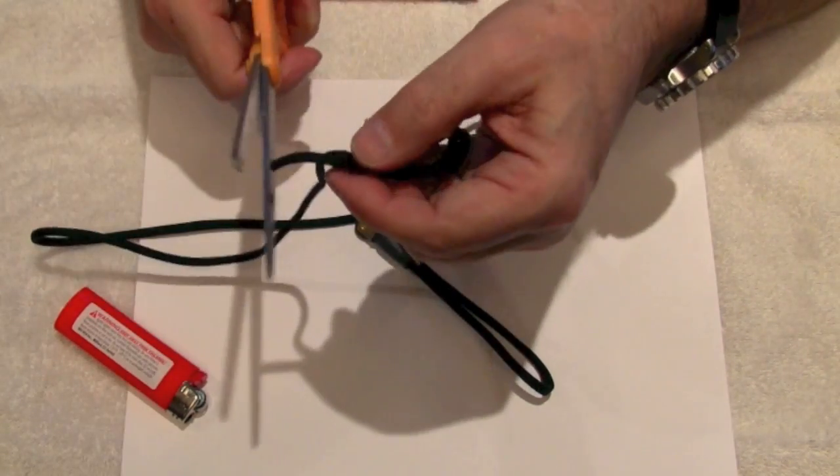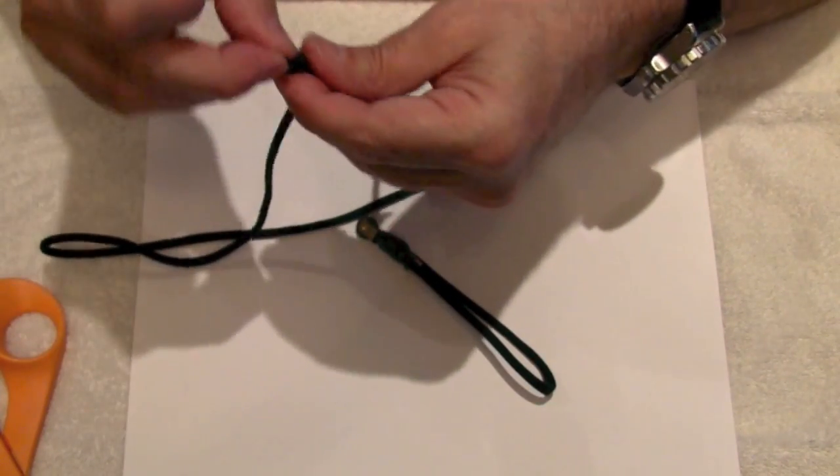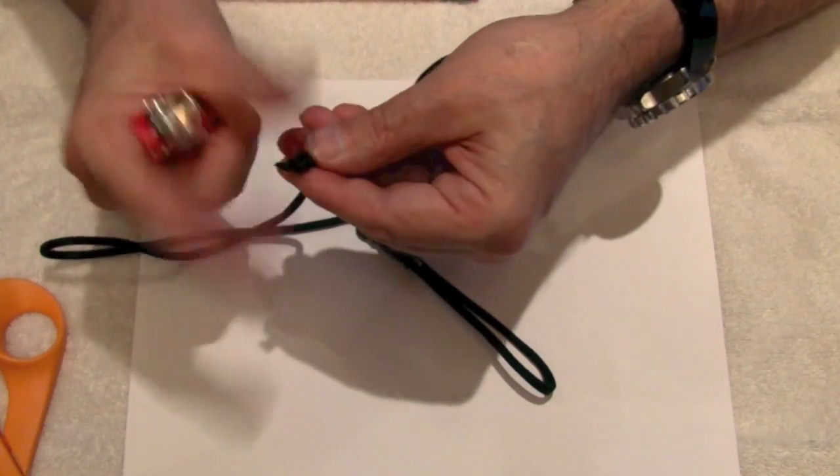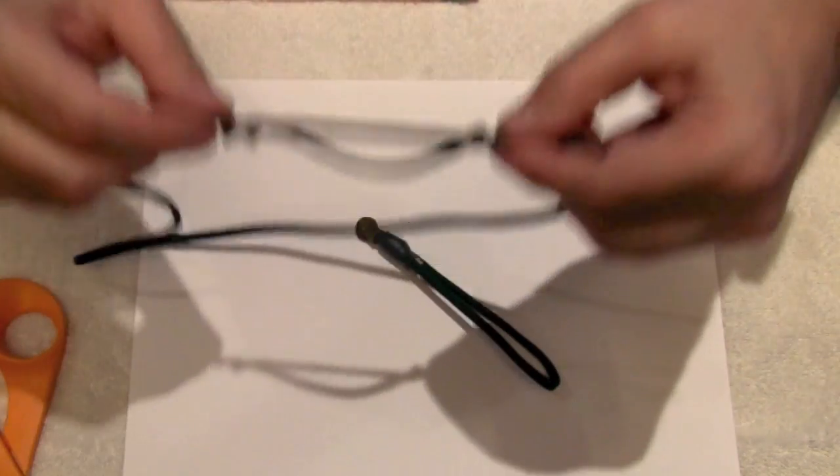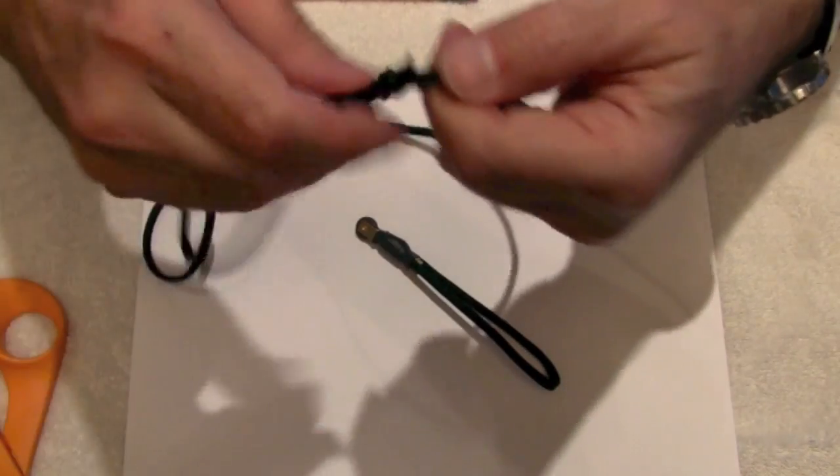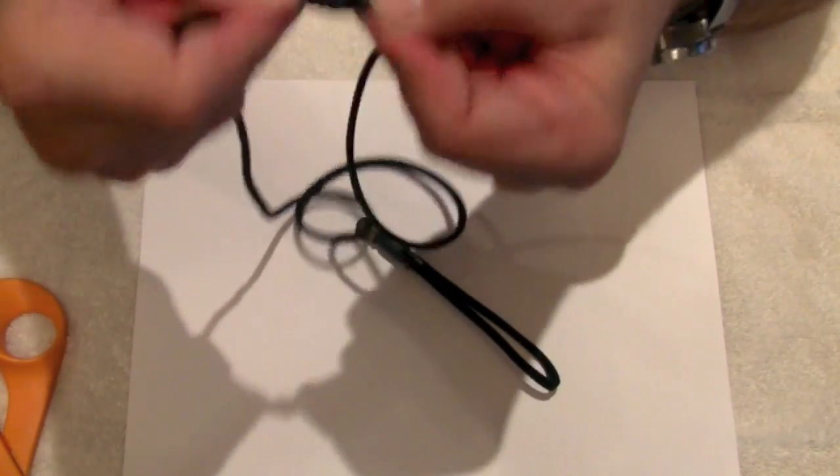Pull it tight, trim the end, seal that end. And now all you do is you pull these two tight and you've got a nice low profile knot. And we've made a necklace essentially.